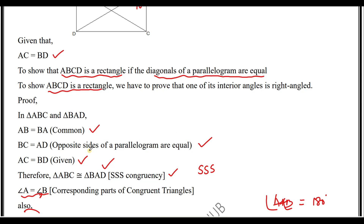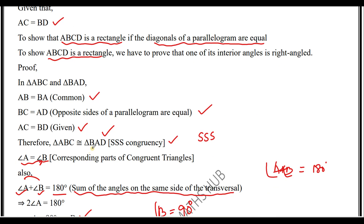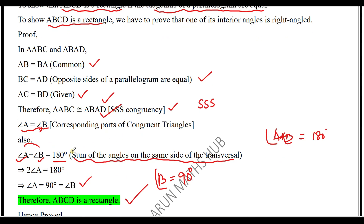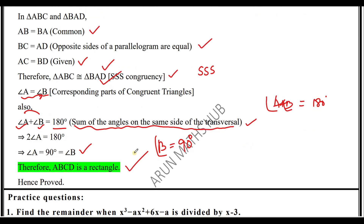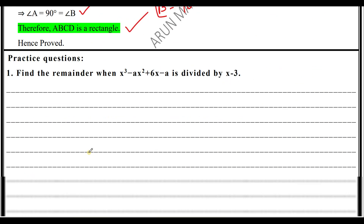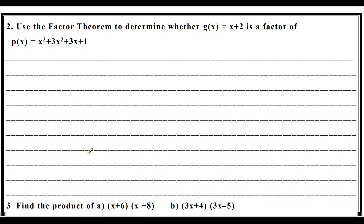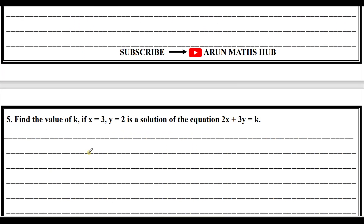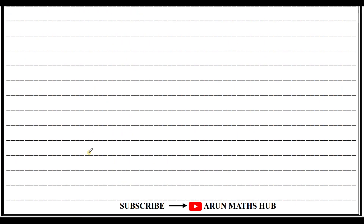Try to understand: which congruency should you use? You should use SSS. Also, the sum of angles on the same side of the transversal equals 180 degrees. These are the practice questions — do download the worksheet and solve all these questions. Definitely it will be useful. If you have not subscribed to the channel, do subscribe and also join my WhatsApp channel and Telegram group. The link is provided in the description. Thank you.